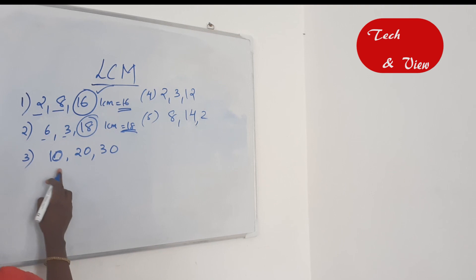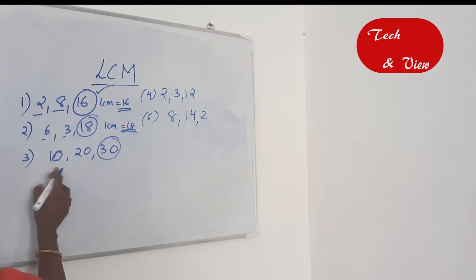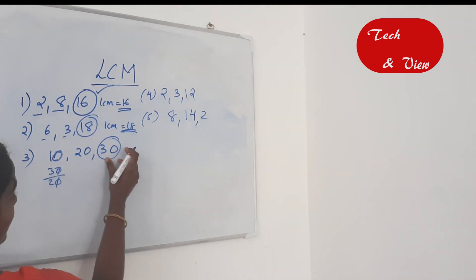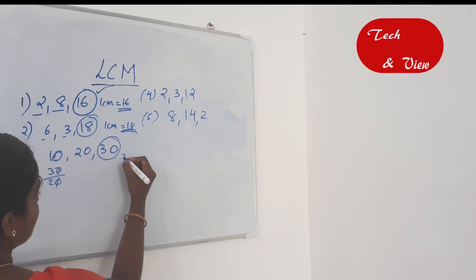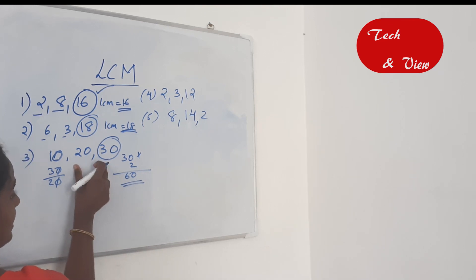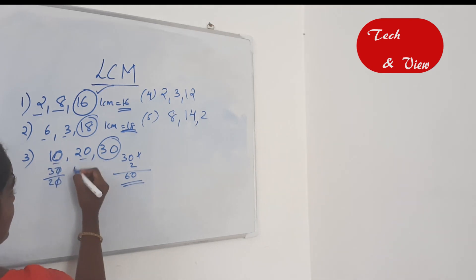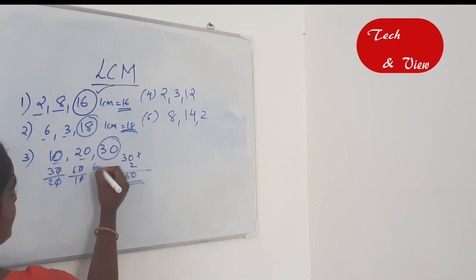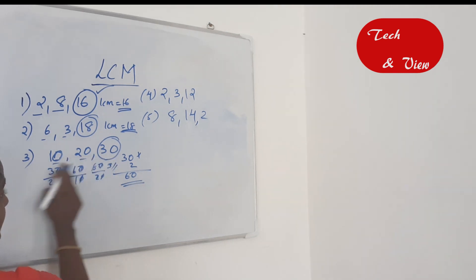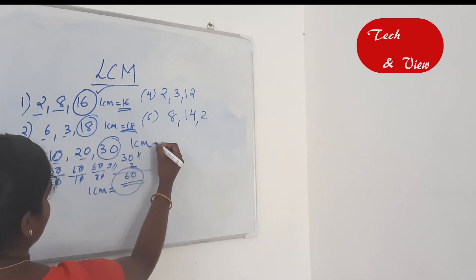Third question: 10, 20, 30. The largest number is 30. 30 divided by 10 is 3 — fully divisible. But 30 divided by 20 gives a remainder, so 30 is not the LCM. We multiply: 30 by 2 is 60. 60 divided by 10 is 6, 60 divided by 20 is 3, 60 divided by 30 is 2 — all fully divisible. So LCM of 10, 20, 30 is 60.